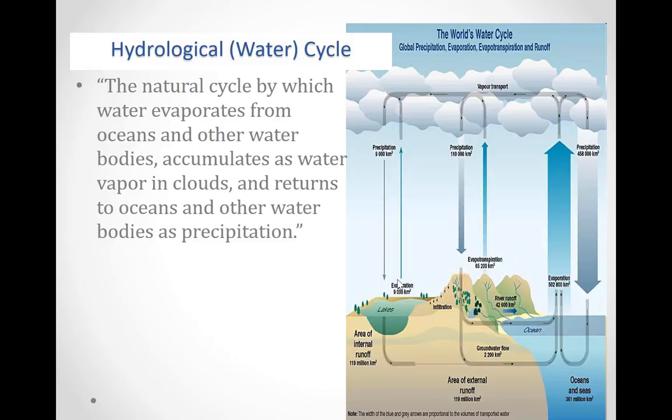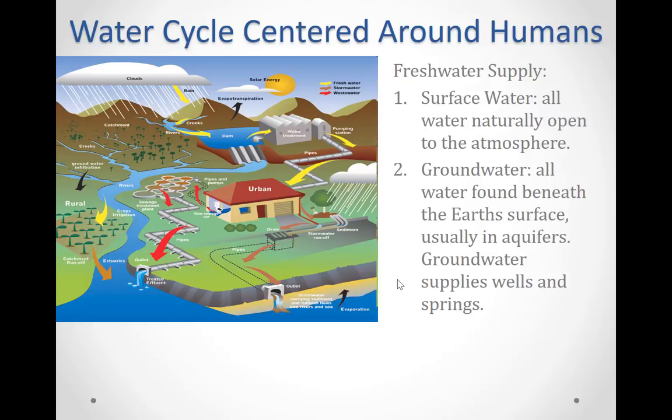This water cycle we humans have centered around us, and we know that available freshwater supplies are often conceptually divided into surface water and groundwater. Surface water includes all water naturally open to the atmosphere, such as rivers, lakes, reservoirs, ponds, streams, impoundments, estuaries, and the like.